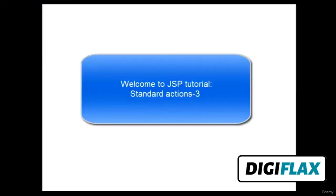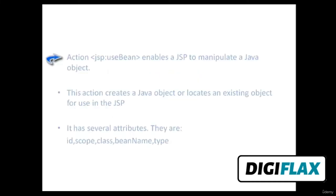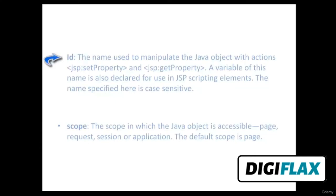In this tutorial, we are going to learn standard actions in JSP — specifically jsp:useBean. The jsp:useBean action enables a JSP to manipulate a Java object. This action creates a Java object or locates an existing object for use in the JSP. It has several attributes: id, scope, class, beanName, and type. The id attribute is the name used to manipulate the Java object with jsp:setProperty and jsp:getProperty actions. A variable of this name is also declared for use in JSP scripting elements, and the name specified is case sensitive.